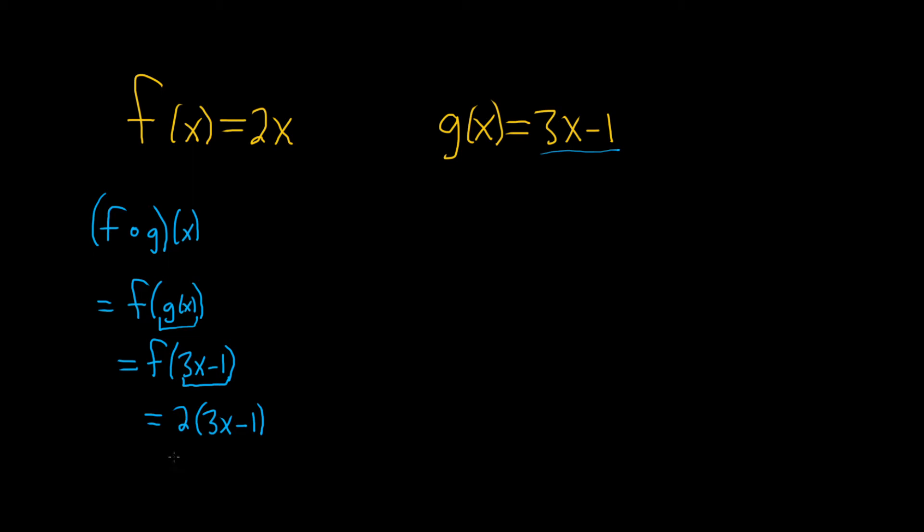And now we just distribute. 2 times 3x is 6x. 2 times negative 1 is negative 2. And that's our new function, which is called the composition f∘g of x.